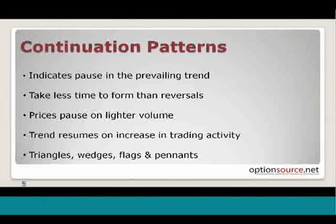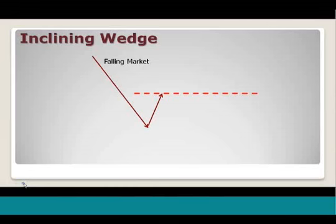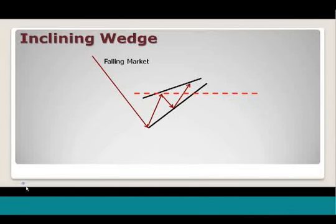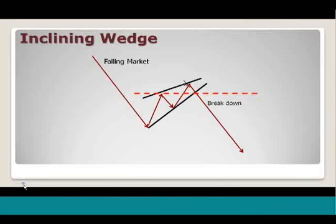We've got a number of different patterns that we look at: triangles, wedges, flags, and pennants. What we're really going to look at is an inclining wedge, which is the first of them, where we have a falling market. We have a rally into a resistance, sort of leading people to believe that it's going to be a continuation or a reversal, then a pullback and another continuation. But as we move forward, our highs are getting higher, but our lows are getting higher faster. The moves are not correlating with one another, and you'll generally see signals on the lower indicators supporting the probability that this is just a false breakout — something we want to look at before we commit ourselves in any direction.